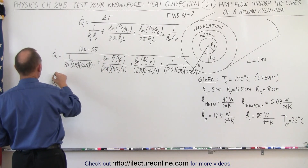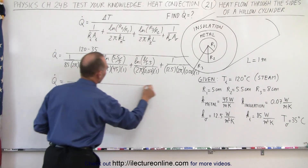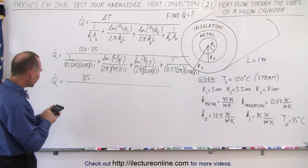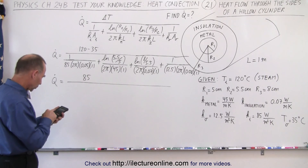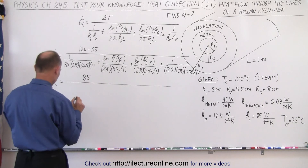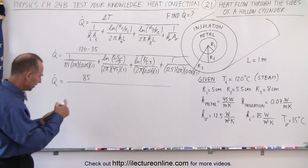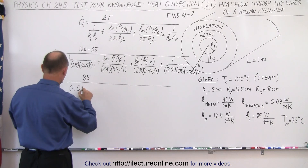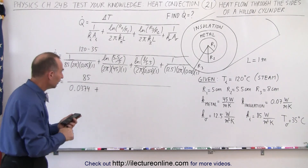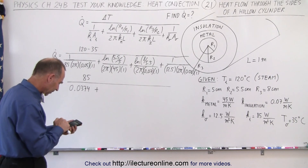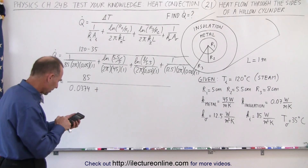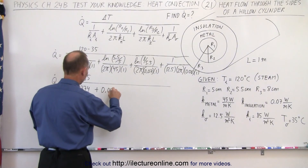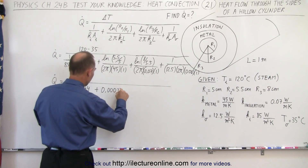So let's find Q-dot. Q-dot is equal to 85 divided by the sum of those terms — let's calculate each one. First: 1 over (85 × 2π × 0.05) gives us 0.0374. Next: the natural log of 5.5 over 5, which is ln(1.1), divided by 2π times 45, gives us 0.000337.